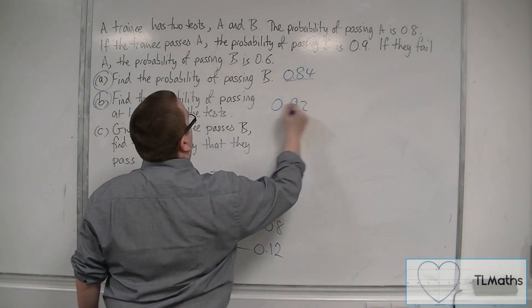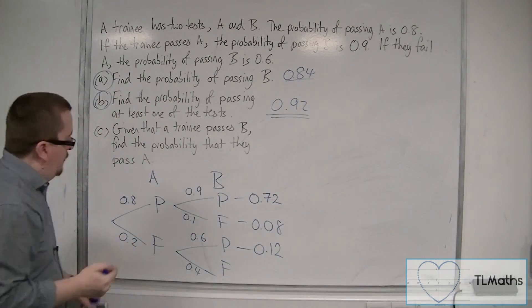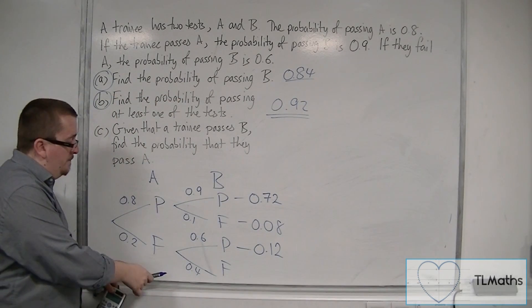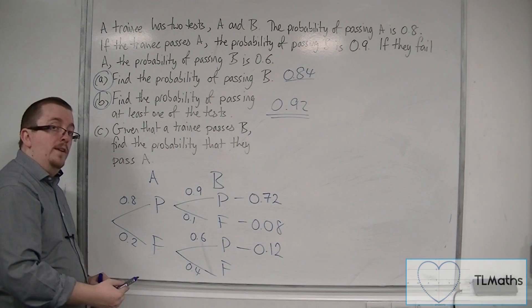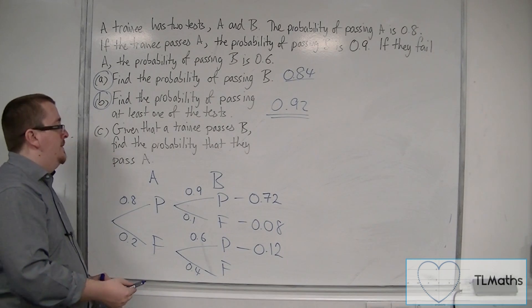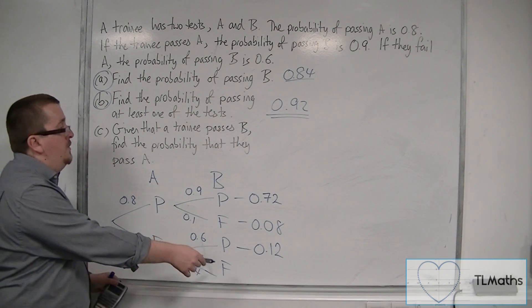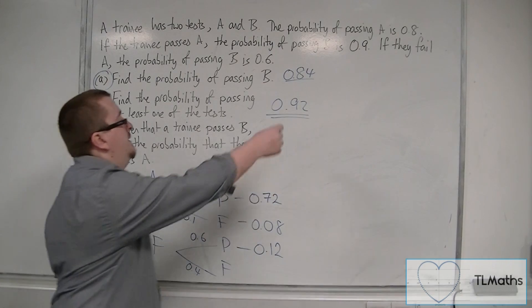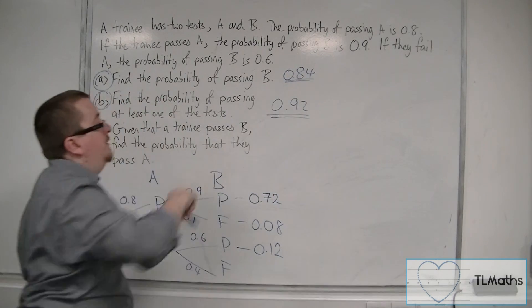You could also work this out by finding the probability that they fail both and subtracting from 1. If they fail both, that probability is 0.08, so 1 minus 0.08 gives the same answer: 0.92.